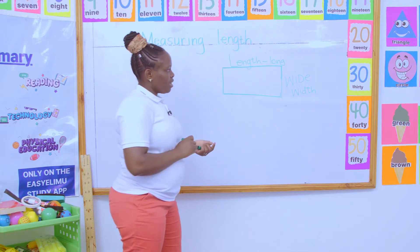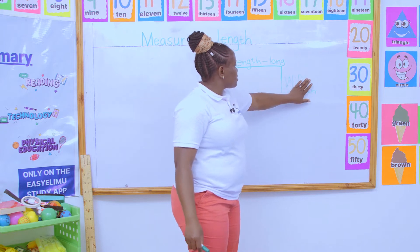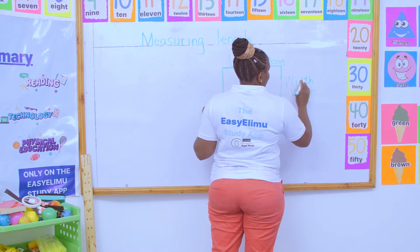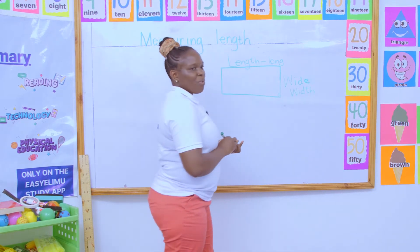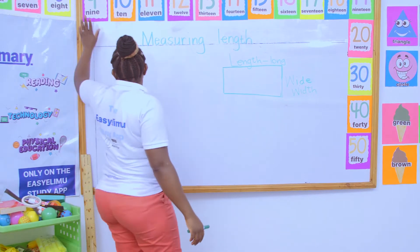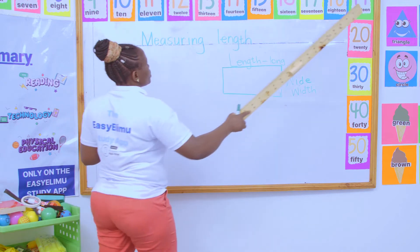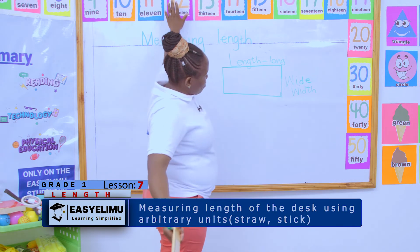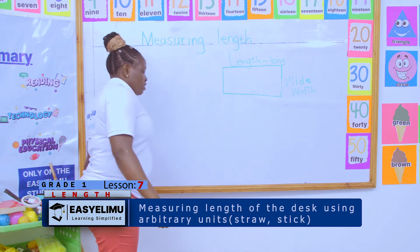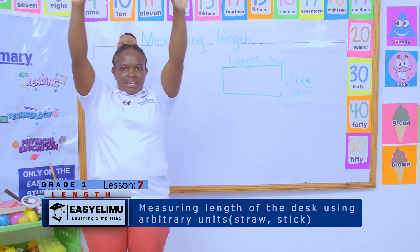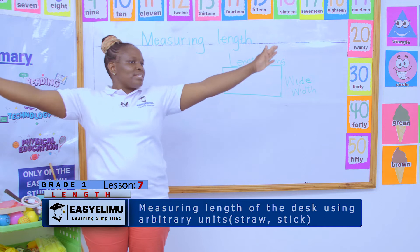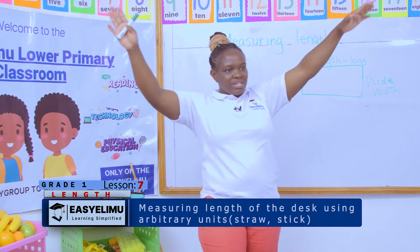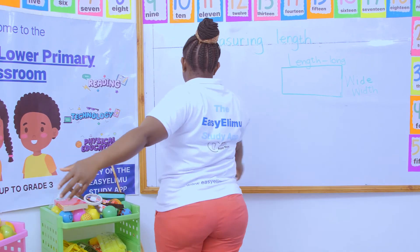Width — how wide something is. Teacher, you have mixed capital letters, and I'm very sorry — it's 'width.' So for example, look at our blackboard. These sides from here to here — this is how long the blackboard is. And this is how wide the blackboard is. When I do like this, it is how long my hands can go. But when I do like this, it is how wide they can occupy.